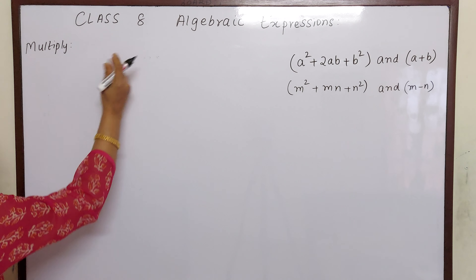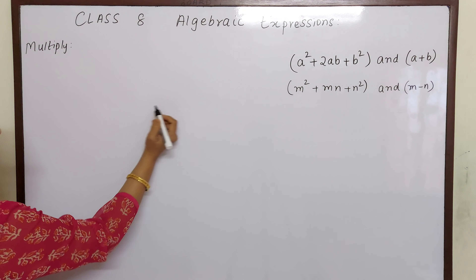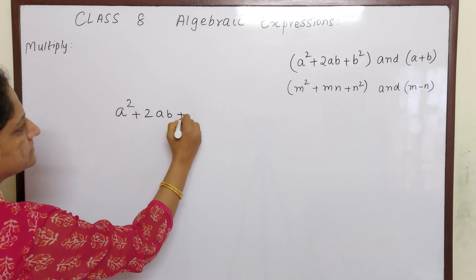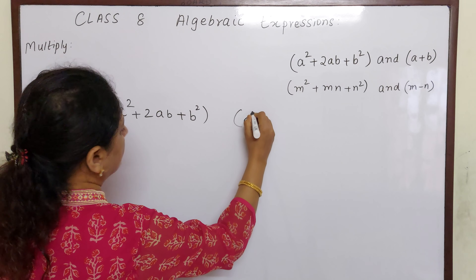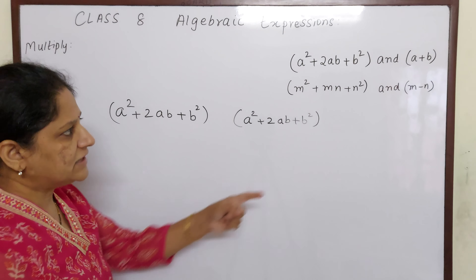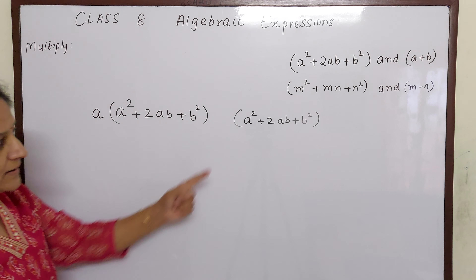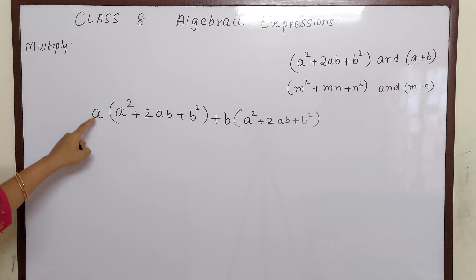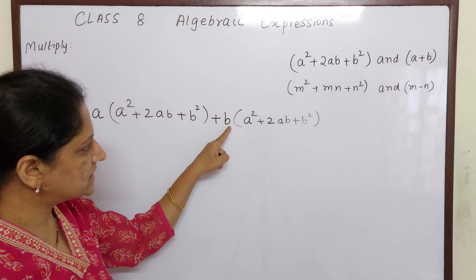Next sum: a² + 2ab + b². We will write a² + 2ab + b² twice, and then multiply it with a + b. I will write a before the first bracket and b before the second bracket. Now I have to multiply a with each term, and then multiply b with each term.